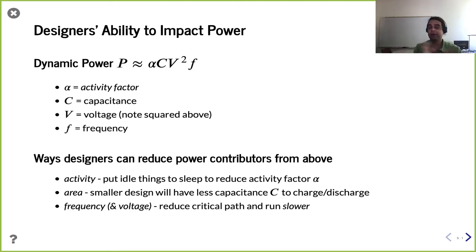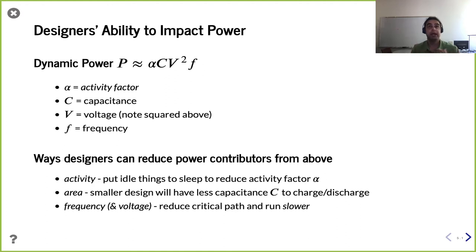If you're charging and discharging more times per second, that requires more power. More capacitance requires more power to charge. The V-squared term reflects the potential. The activity factor captures how often signals actually toggle. If you look at hardware design waveforms, most of the time a lot of signals are not changing in value. The activity factor is defined as the number of times a given signal changes per cycle.